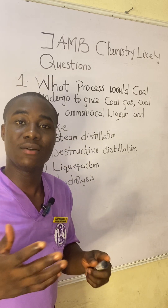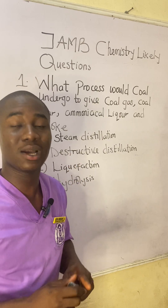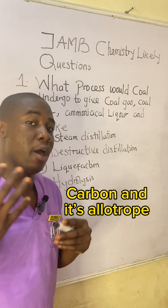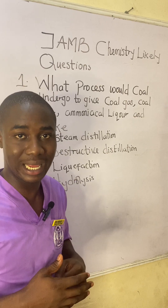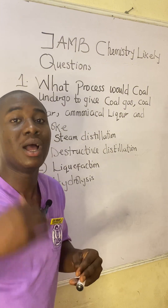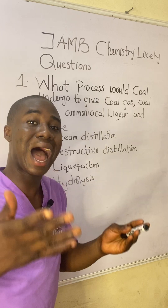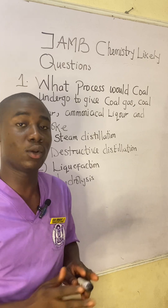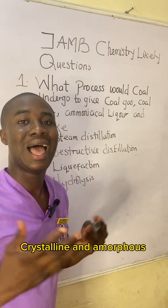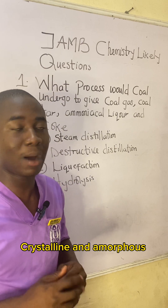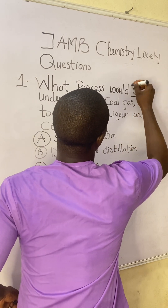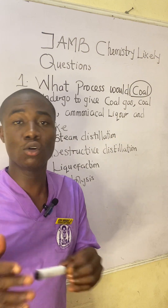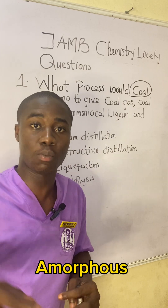This question is from the topic in chemistry called carbon and its allotropes. Remember, carbon is an element — specifically a non-metal — and carbon exists in different allotropic forms. We have two major allotropic forms: the crystalline allotropes of carbon and also the amorphous allotropes of carbon.